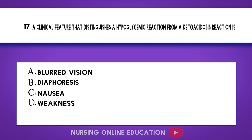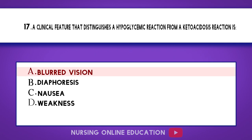Question 17. A clinical feature that distinguishes a hypoglycemic reaction from a ketoacidosis reaction is: A. Blurred vision. B. Diaphoresis. C. Nausea. D. Weakness. The answer is option A: Blurred vision.